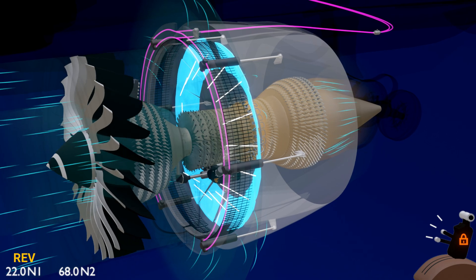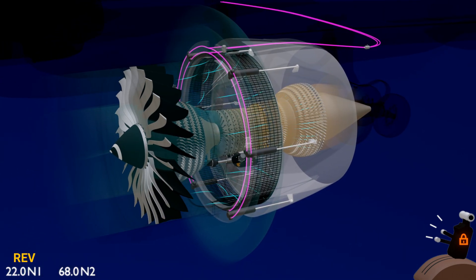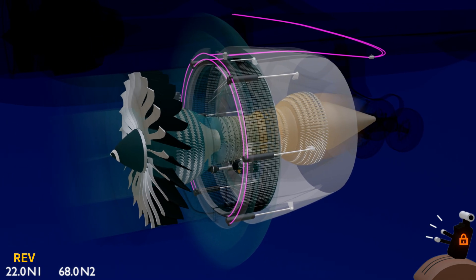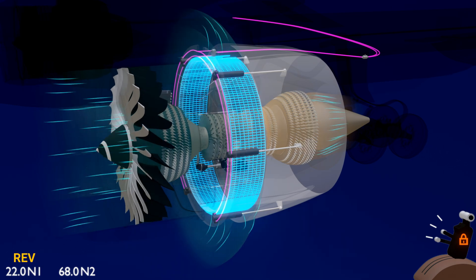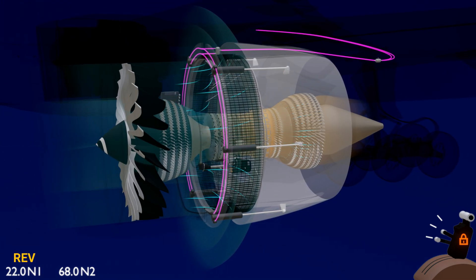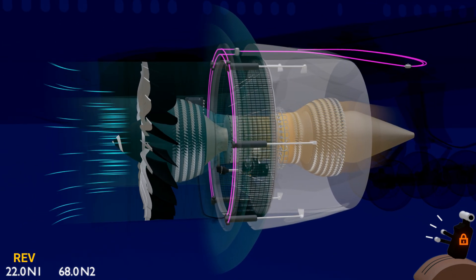Connected to the reverser sleeve are the blocker doors that get dragged with the sleeve and move to closed position. The engine bypass airflow, that contributes majority of the forward thrust, hits the blocker doors and vacates through the cascade segments. Cascade segments ensure the exit airflow is not turbulent. Sensors on the actuators send the reverser position data to the EEC.